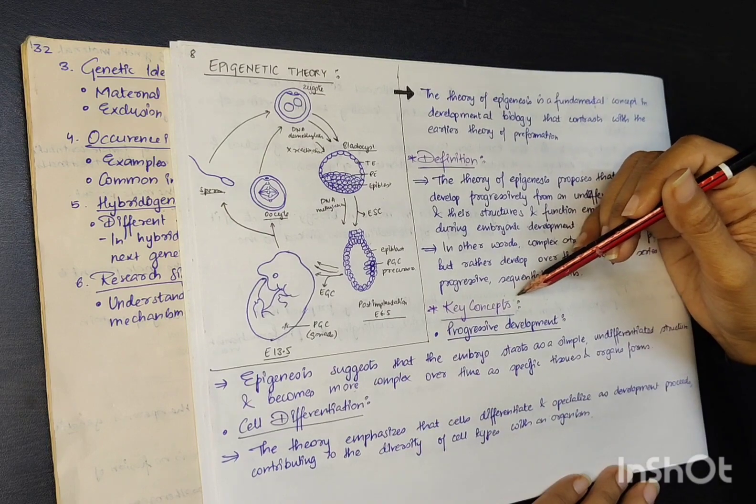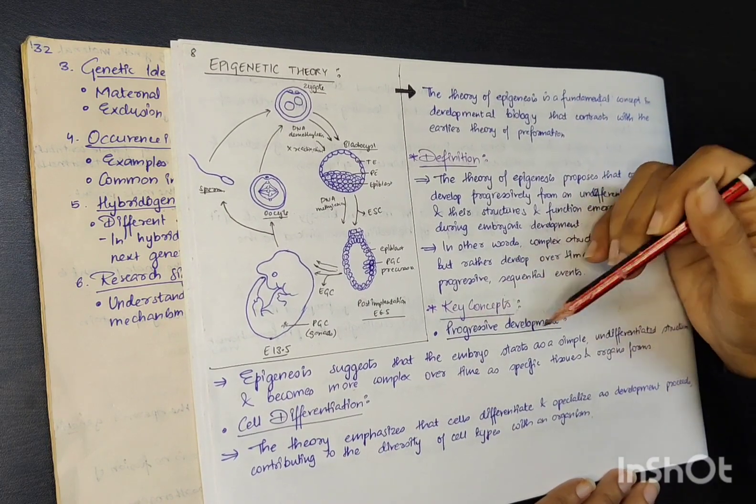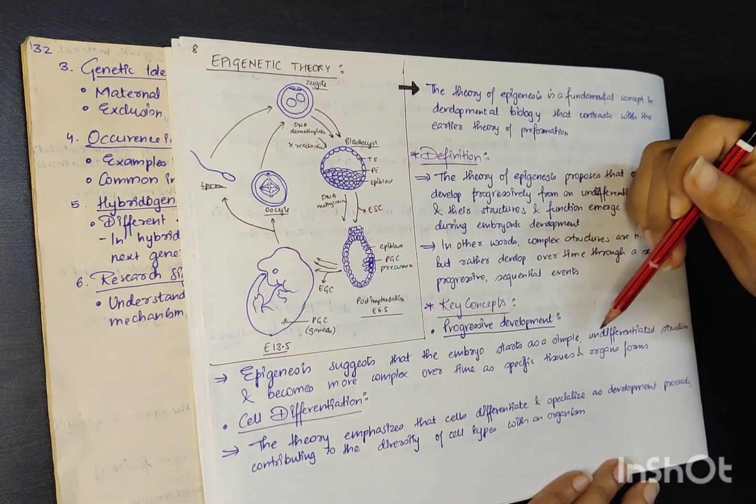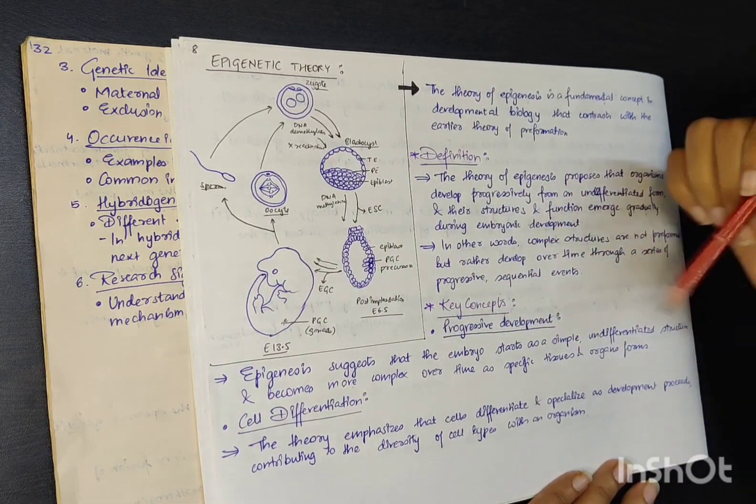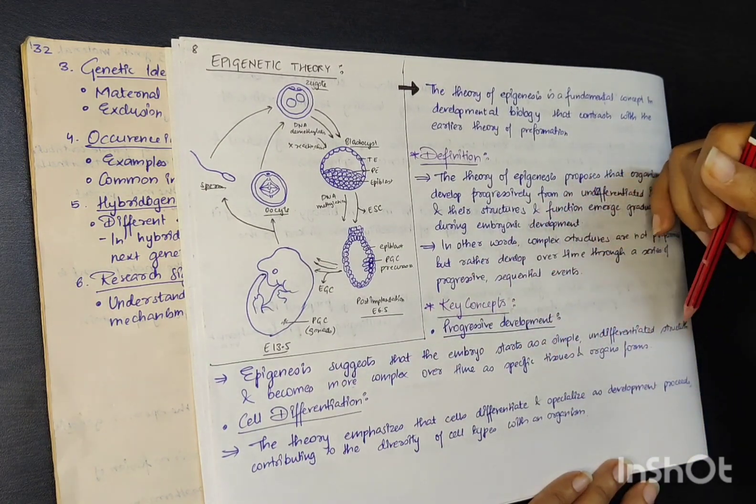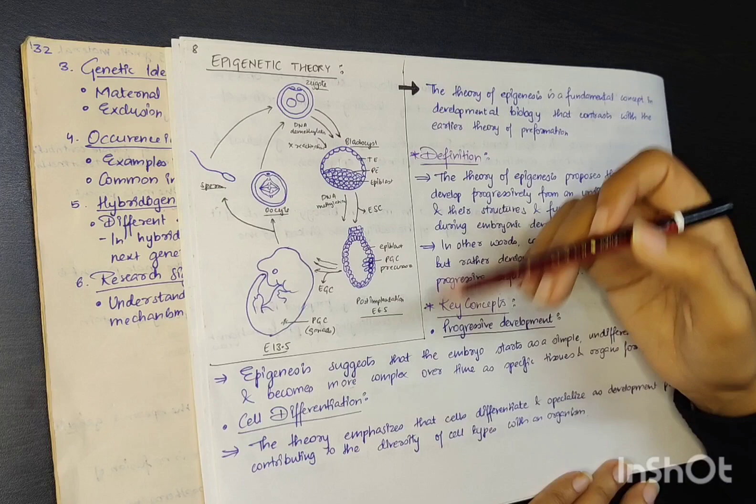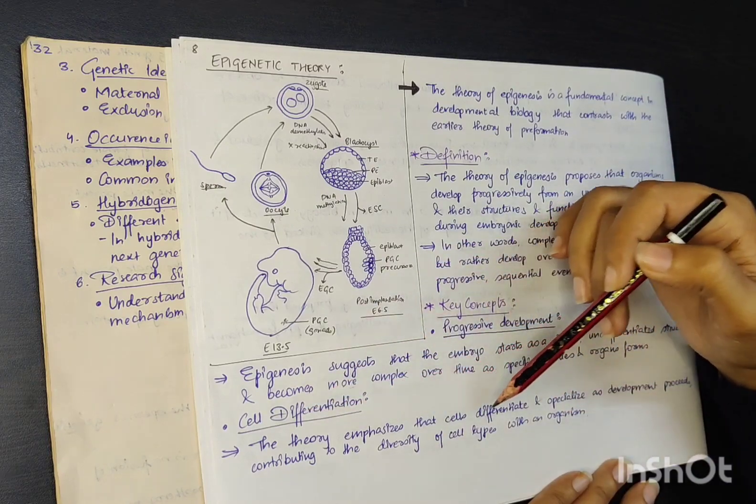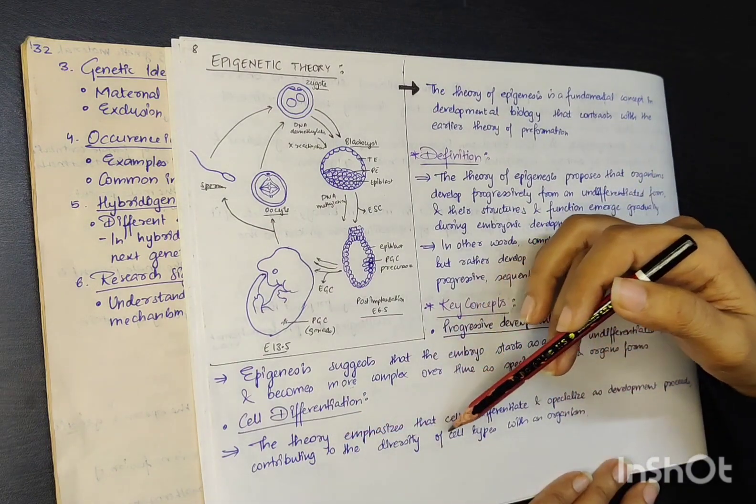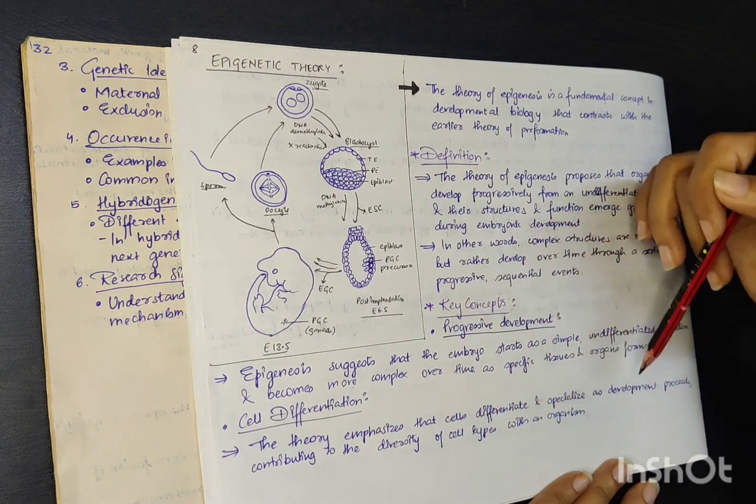The key concept involved in epigenetic theory is progressive development. Epigenetic theory suggests that the embryo starts as a simple undifferentiated structure and becomes more complex over time as specific tissue and organ forms. Cell differentiation: the theory emphasizes that cells differentiate and specialize as development proceeds, contributing to diversity of cell types within an organism.